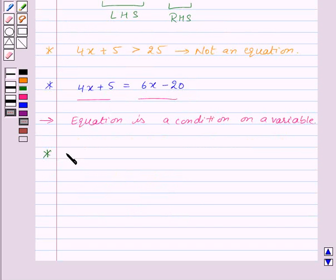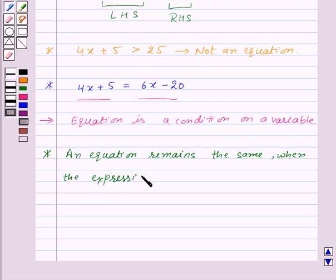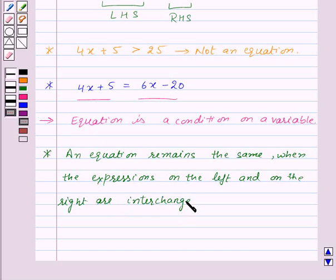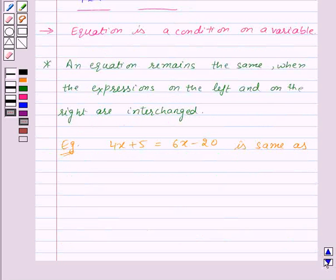Now there is an important property of equations. An equation remains the same when the expressions on the left and on the right are interchanged. For example, the equation 4x plus 5 is equal to 6x minus 20 is same as the equation 6x minus 20 is equal to 4x plus 5.